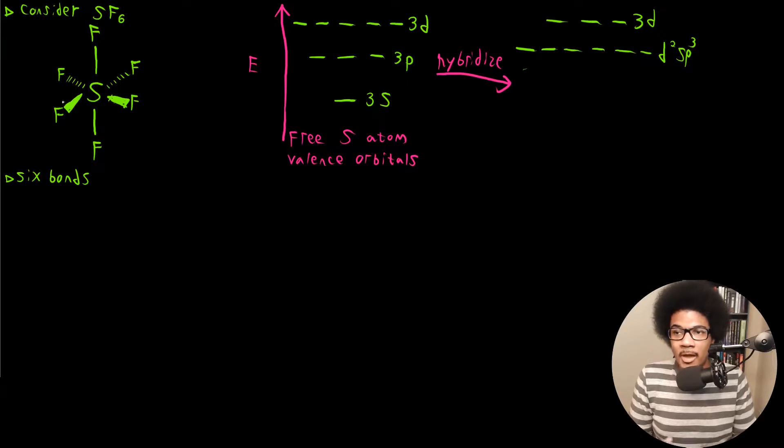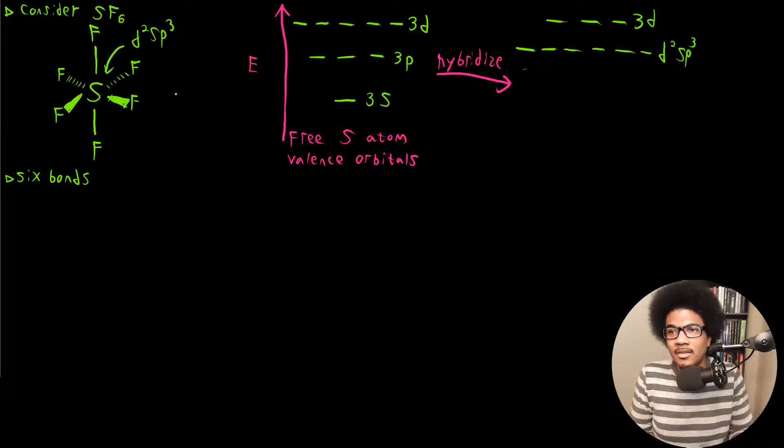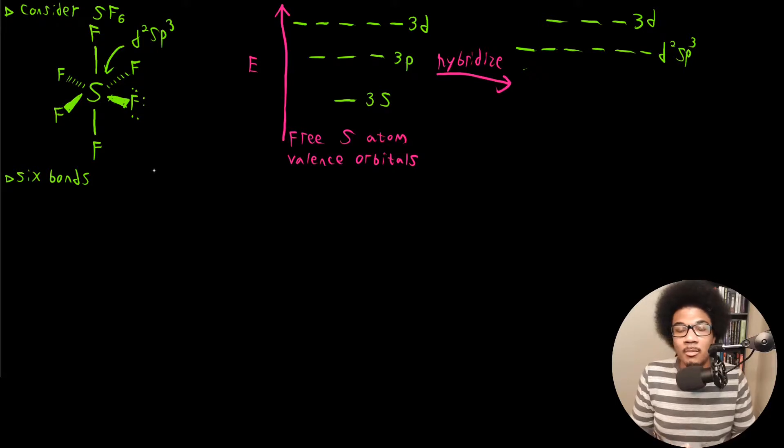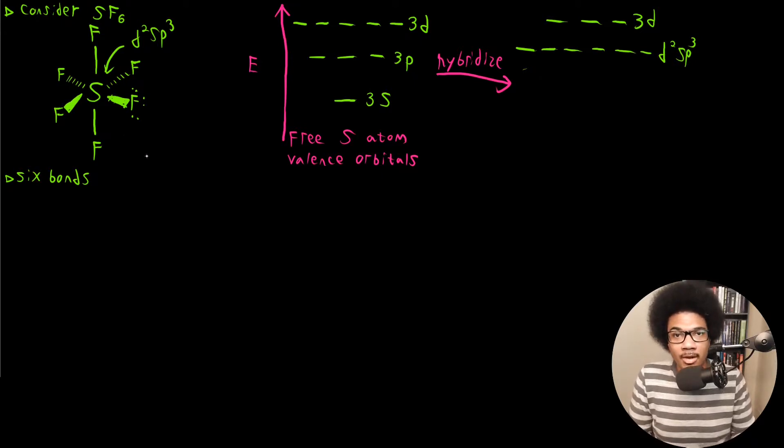So without drawing the diagram again, you kind of get the picture here. So this sulfur atom is going to be D2SP3 hybridized. And again, each of these fluorines are going to have lone pairs around them. So each of these sigma bonds will be an interaction between a sulfur D2SP3 orbital and a fluorine SP3 orbital that form each of these sulfur fluorine bonds.